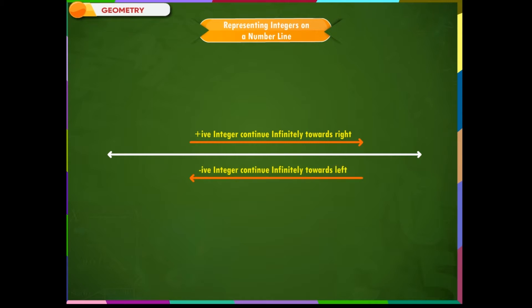Representing integers on a number line: Draw a line with arrows at both ends. These arrows signify that the positive integers continue infinitely toward the right, and similarly, the negative integers continue infinitely towards the left. Mark the middle of the line and write 0 there. Now, make markings on the right of 0 that are equidistant from each other. You can use a ruler to get clear equidistant markings. Write the positive integers 1, 2, 3, 4, 5 and so on towards the right of 0.